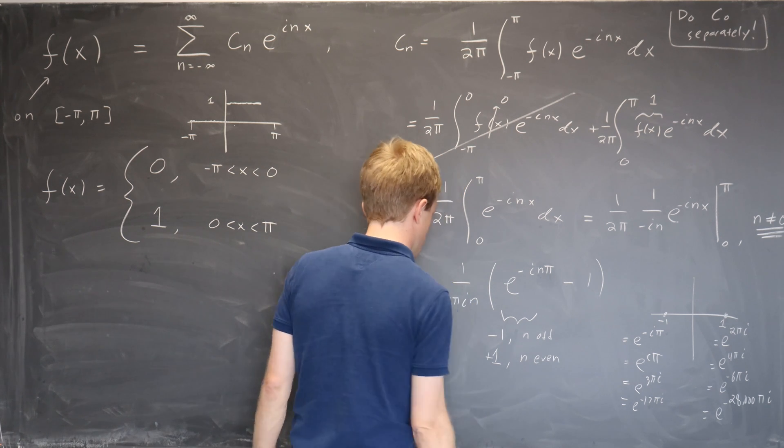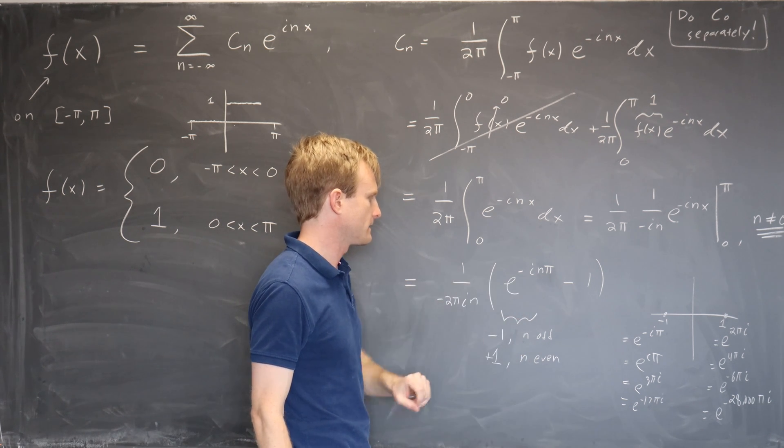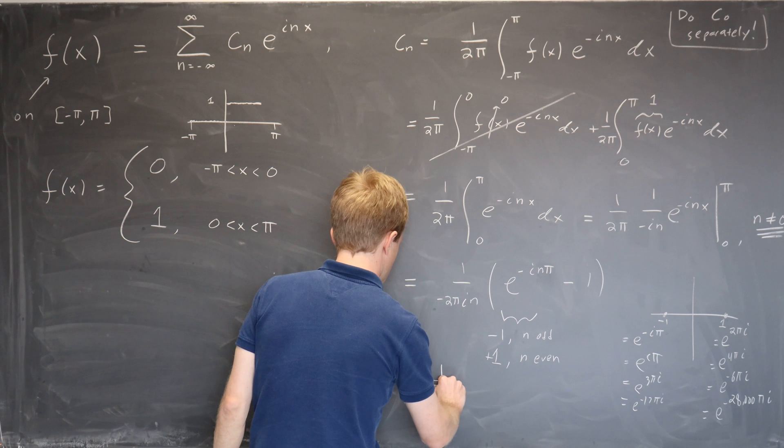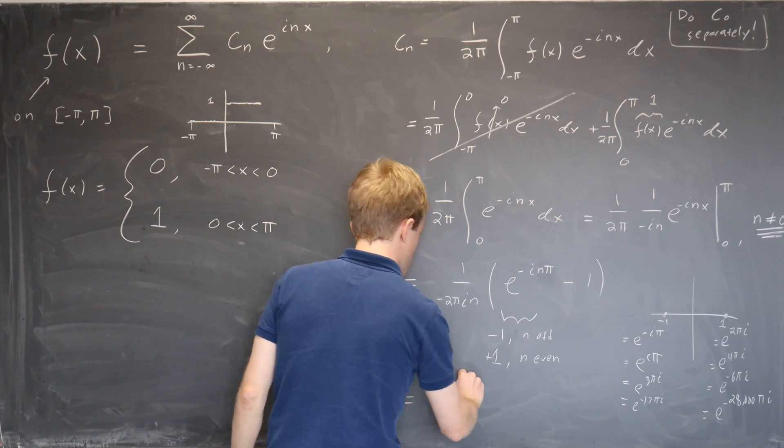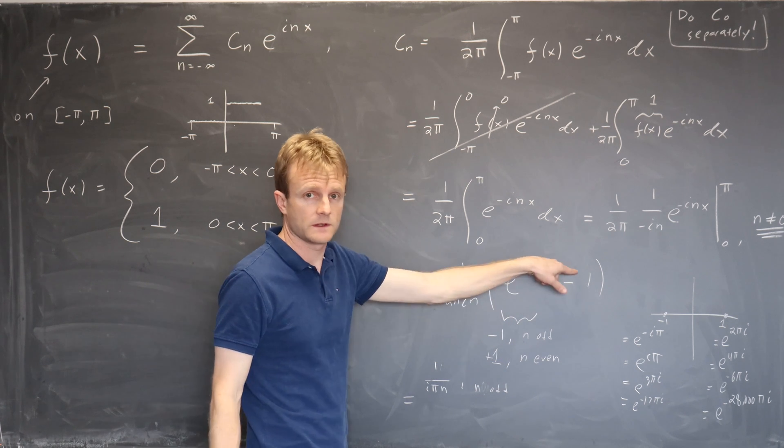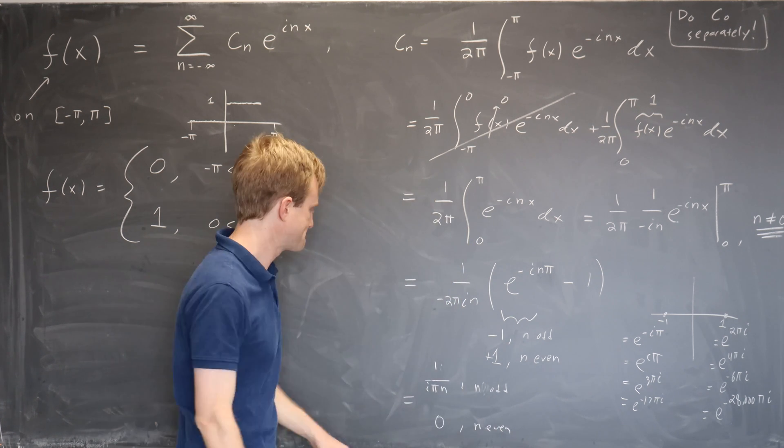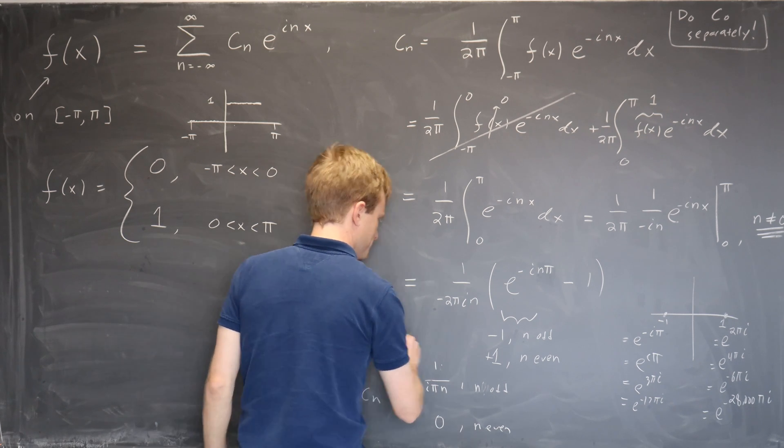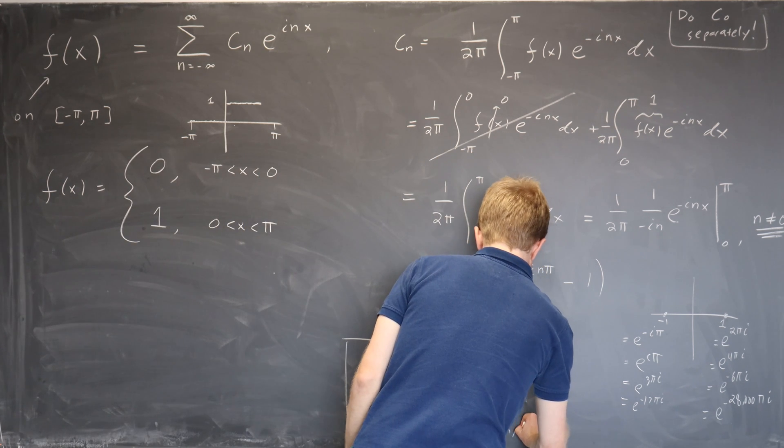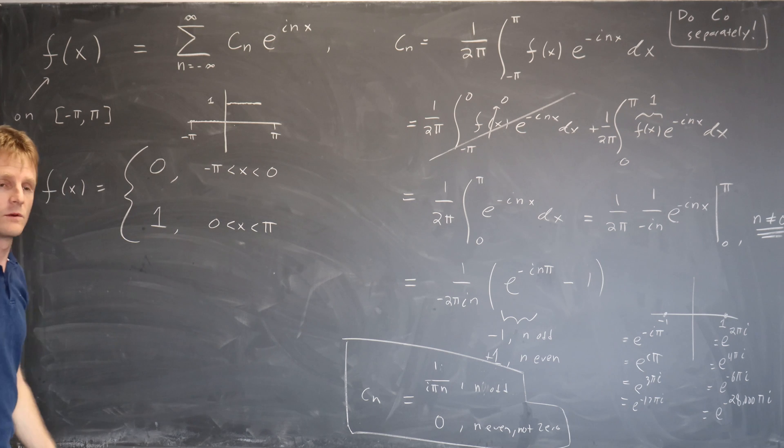So now we simplify things down here. If n is odd, we're going to have minus 1 and minus 1, so we're going to get minus 2. That's going to cancel this minus 2. So we're going to have 1 over pi in when n is odd. And when n is even, this is plus 1 minus 1 is 0, so you're going to get 0 when n is even not 0. And that's the answer for c_n if n is not 0.